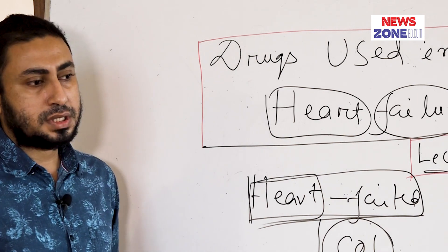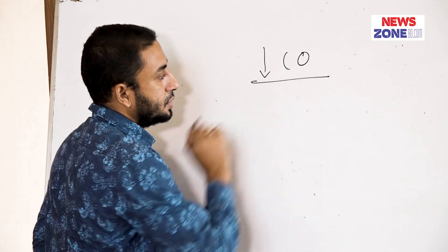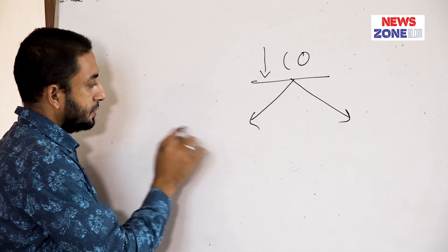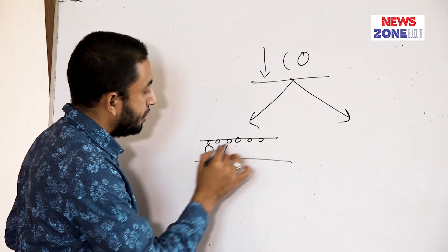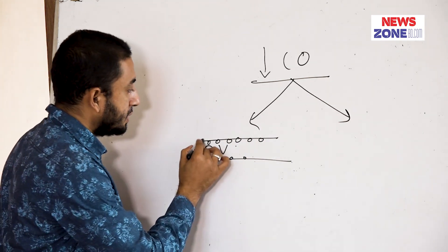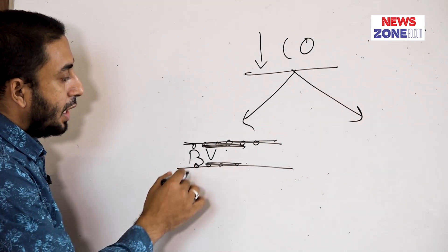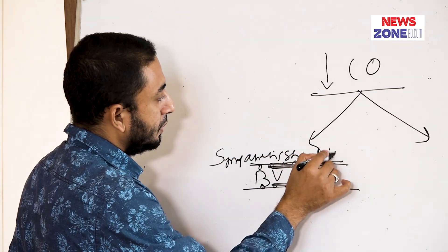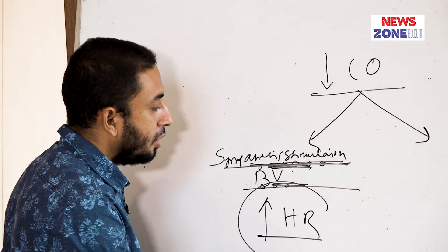Let us start. What is the pathophysiology of heart failure? Our heart has already failed, so cardiac output will be decreased. In the blood vessels there are various baroreceptors. When there is decreased cardiac output, there is under-stretching of these baroreceptors. When there is under-stretching of the baroreceptors, there will be sympathetic stimulation. Due to sympathetic stimulation, heart rate will be increased — that is tachycardia — which is one of the compensatory mechanisms.